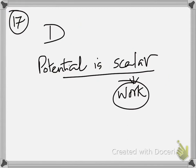Seventeen, which of the following is not a vector. By definition, electric potential is a scalar, because electric potential is defined in terms of work.